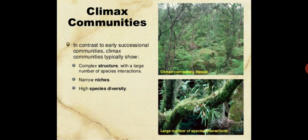Climax community, its types, and theories interpreting climax: The final community in ecological succession which is not replaced is known as the climax community. The term was coined by Clemens. This community is in equilibrium with its environment and represents a steady state of species composition, community structure, and energy flow.